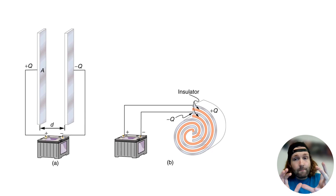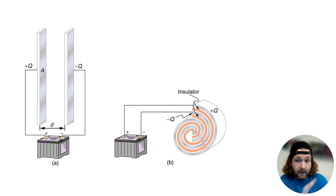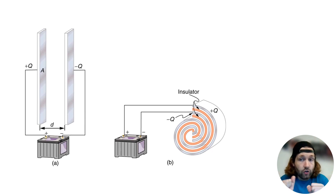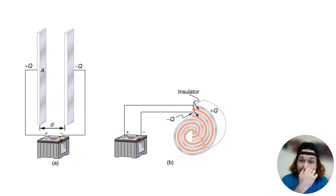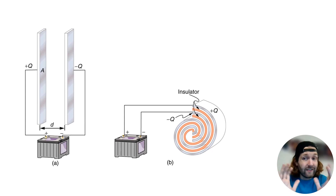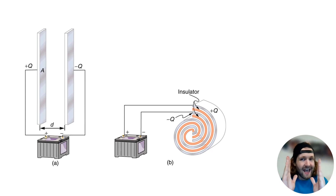When we apply a voltage across the plates, electrons accumulate on one plate, while an equal number of electrons are repelled from the other. This creates an electric field between the two plates, storing energy.